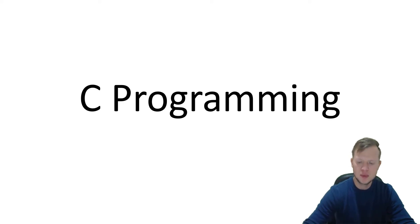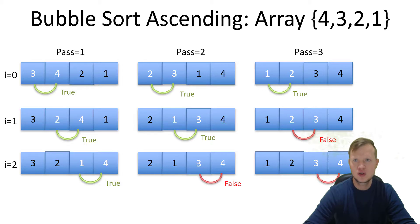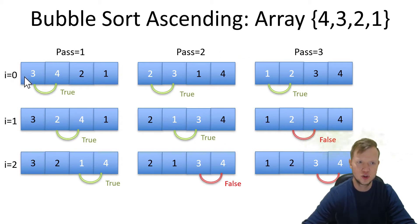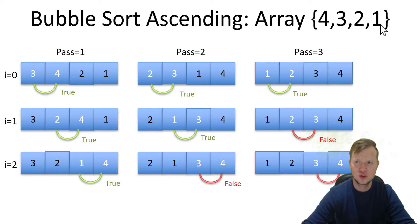The bubble sort algorithm looks something like this. We've got an array of size 4 and the bubble sort will have two for loops - an outer for loop that will traverse the passes and an inner for loop that will traverse for the comparisons. To sort this array of size 4, currently 4 3 2 1, into ascending order 1 2 3 4, this is our worst case scenario for the bubble sort.